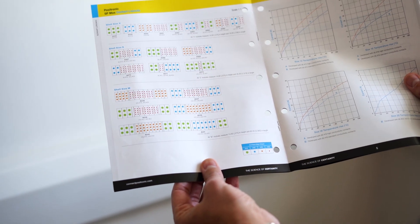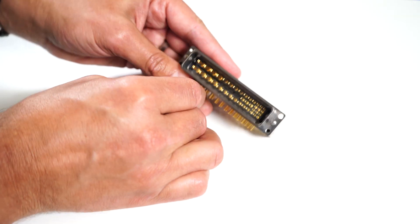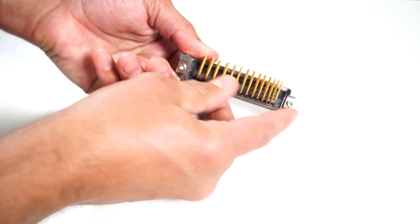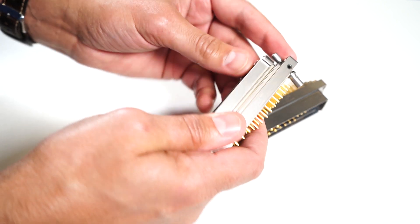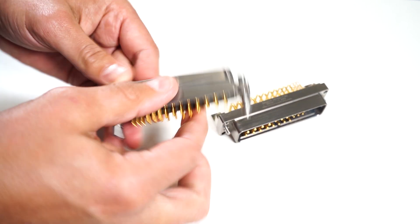For example, if you use the size 12 contacts, the 12 gauge contacts, this means that you can get up to 35 amps that go through it. Or you could use the size 22 contacts, they have 16 and 18 as well. The size 22 contacts means you can have a finer pitch so you can fit more connections within the same shell size of the housing.